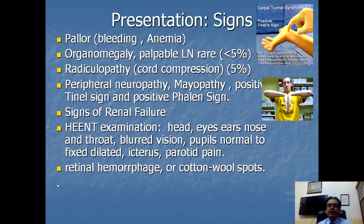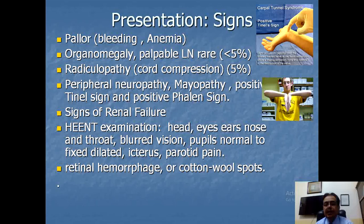The monoclonal protein chains produced in multiple myeloma are of different kinds — kappa and lambda — which we will discuss in the investigations section. The blockage of retinal veins by these cells and proteins produces retinal hemorrhages or cotton wool spots.